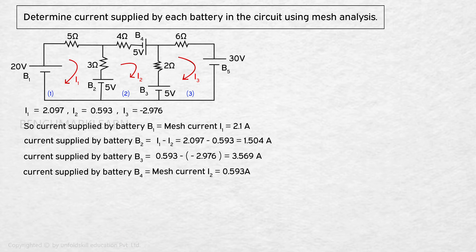Current supplied by battery B4 equal to mesh current I2 which is equal to 0.593 ampere.